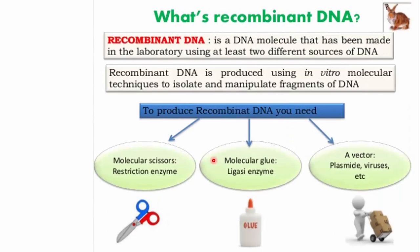Recombinant DNA is a DNA molecule made in the laboratory by taking at least two different sources of DNA. To produce recombinant DNA, we require molecular scissors — restriction endonuclease enzymes — which cut our vector and desired gene of interest. We also need molecular glue, which is the ligase enzyme, to join the vector and gene of interest to form recombinant DNA. The third requirement is a vector, which carries our desired gene of interest into the host cell where it replicates using the host's machinery.